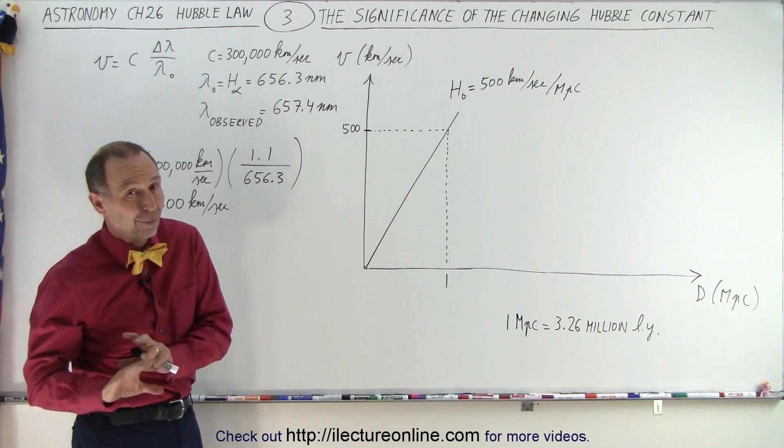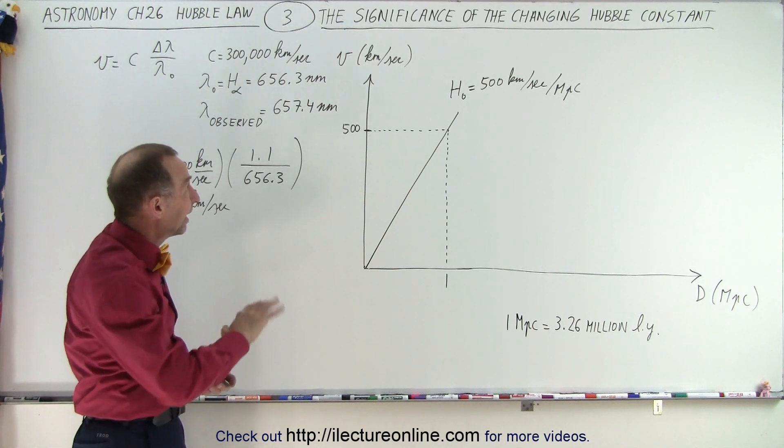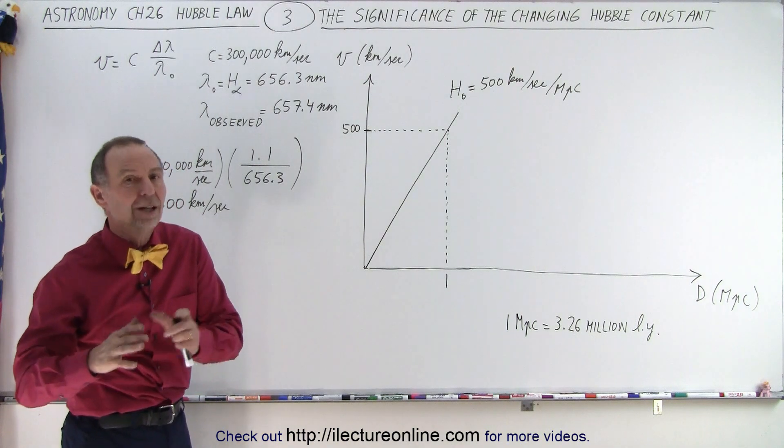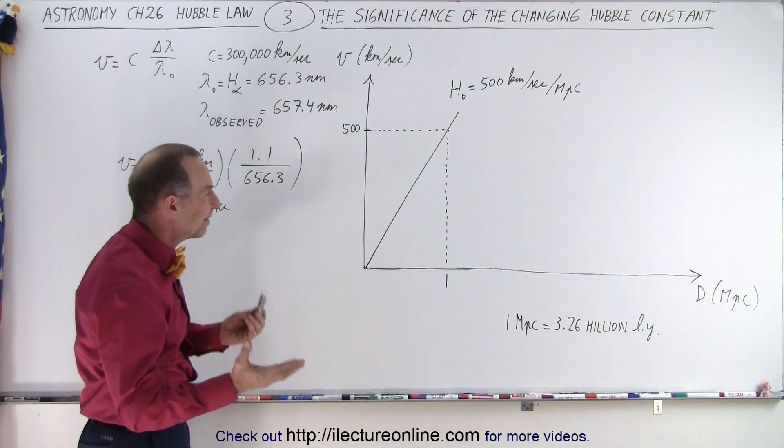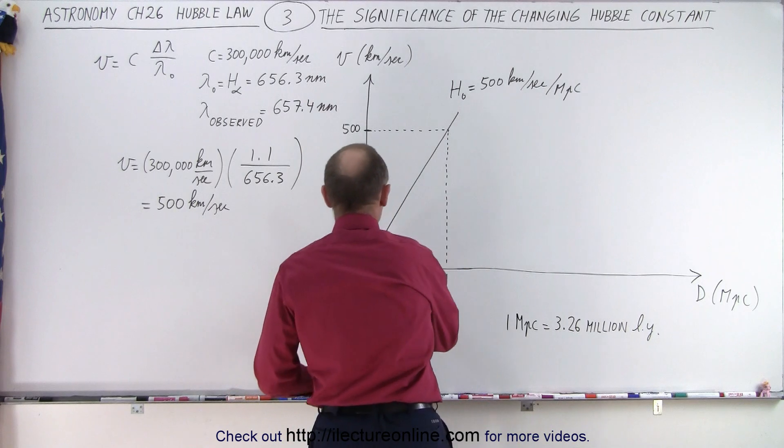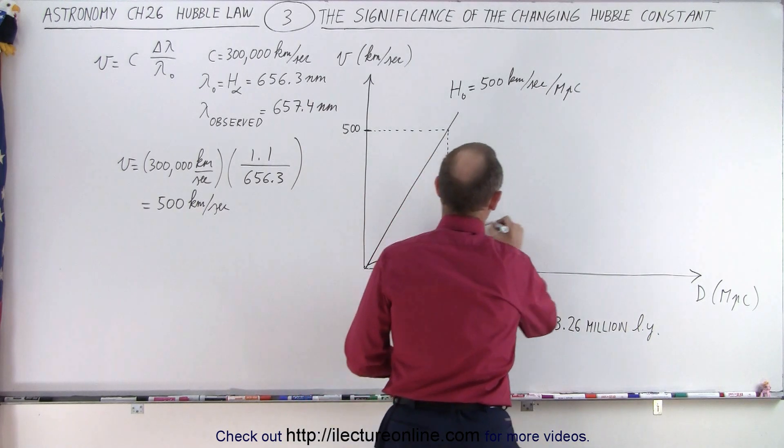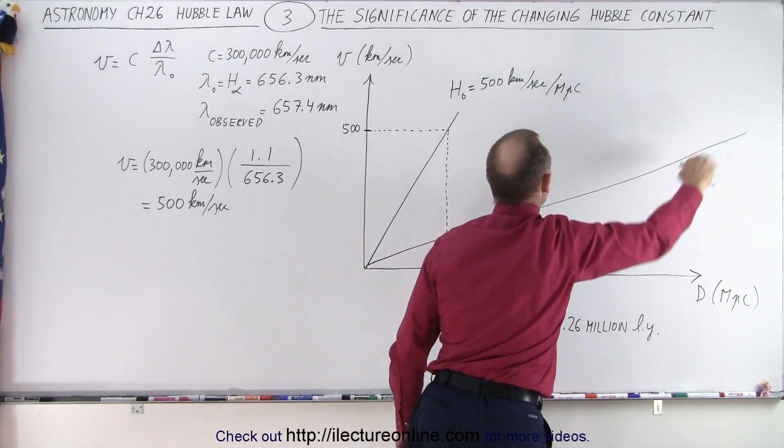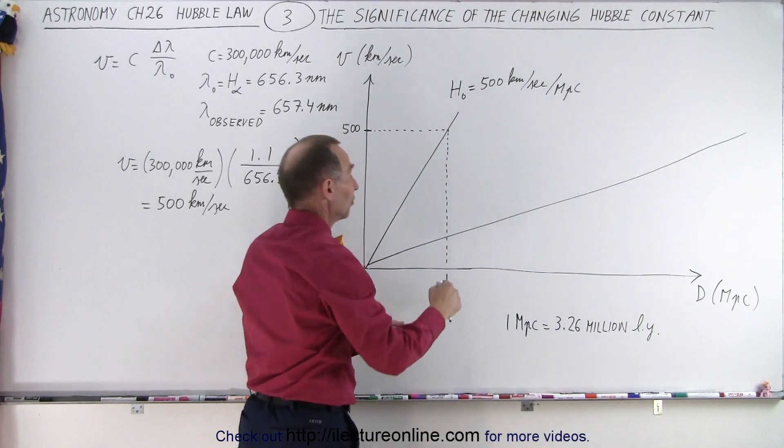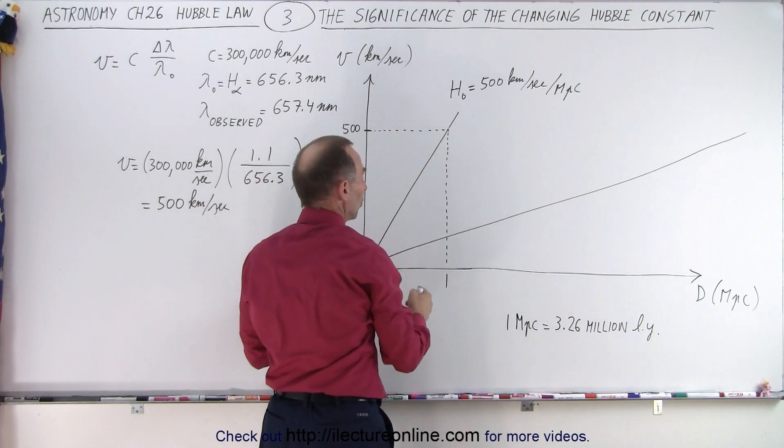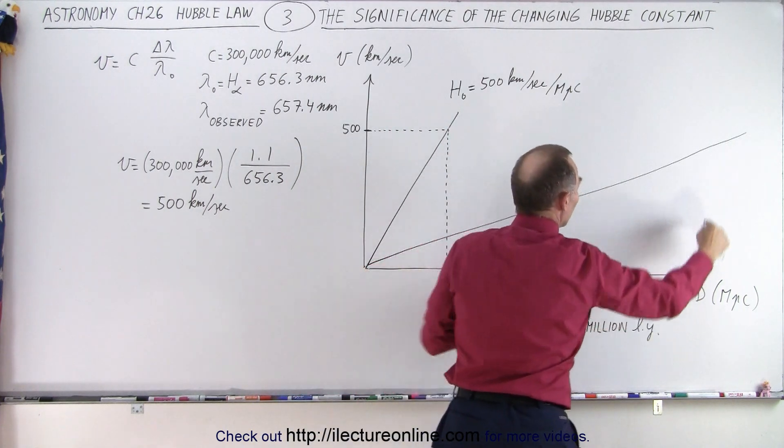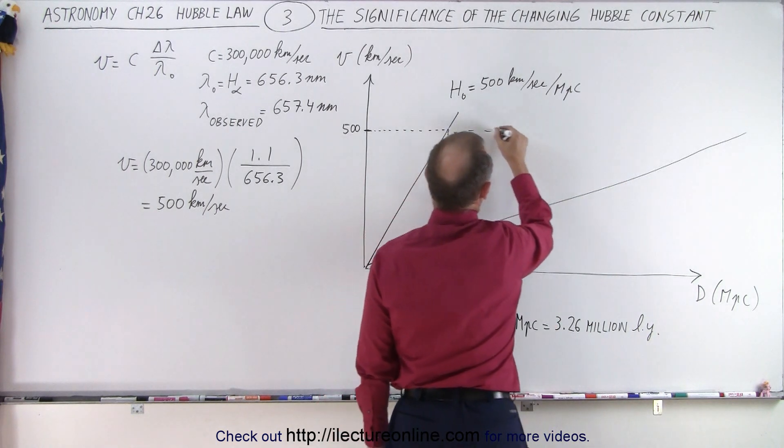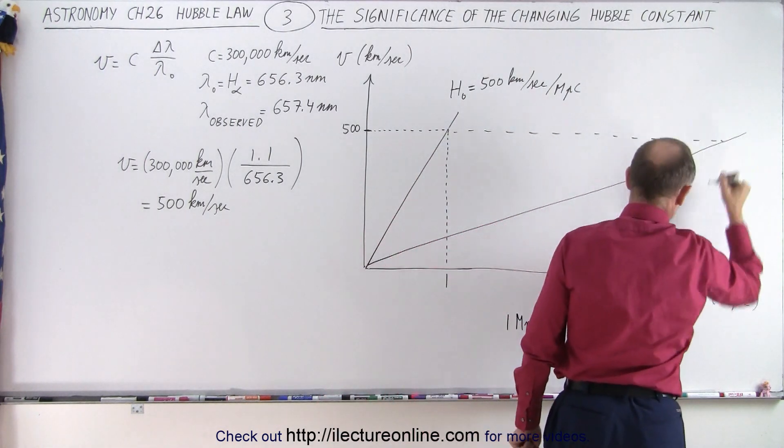But now we realize that the Hubble constant wasn't 500 kilometers per second, it's more like 73 kilometers per second. And again, we're not even 100% sure of that. But let's say it was 73 kilometers per second, which means our Hubble constant graph would look very different. The slope would not be nearly as steep. Remember, the slope is the ratio of the rise over the run. So we'd have a much bigger run over the same rise for a much smaller slope.